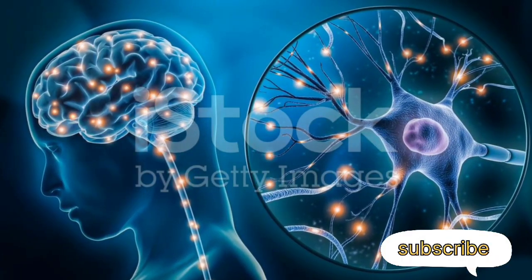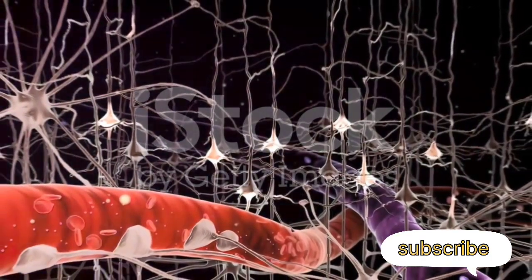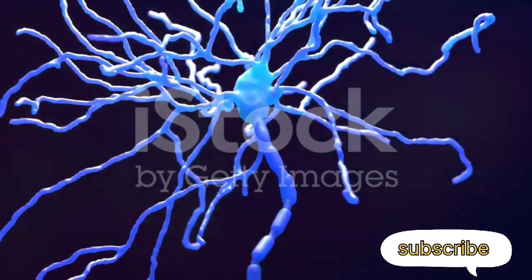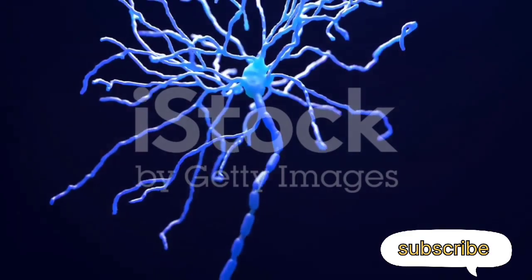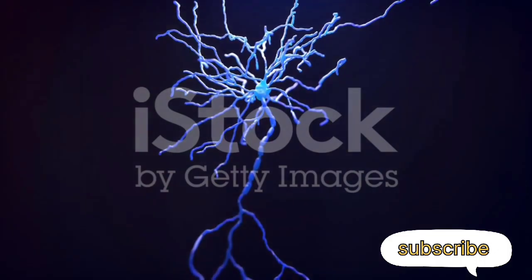Let's start with the cell body, or the trunk of our tree. This is the neuron's command center. It contains the nucleus, which is the brain of the cell, directing all its actions and containing its genetic material. The cell body also has other vital components, like mitochondria that provide energy, and ribosomes that produce proteins.